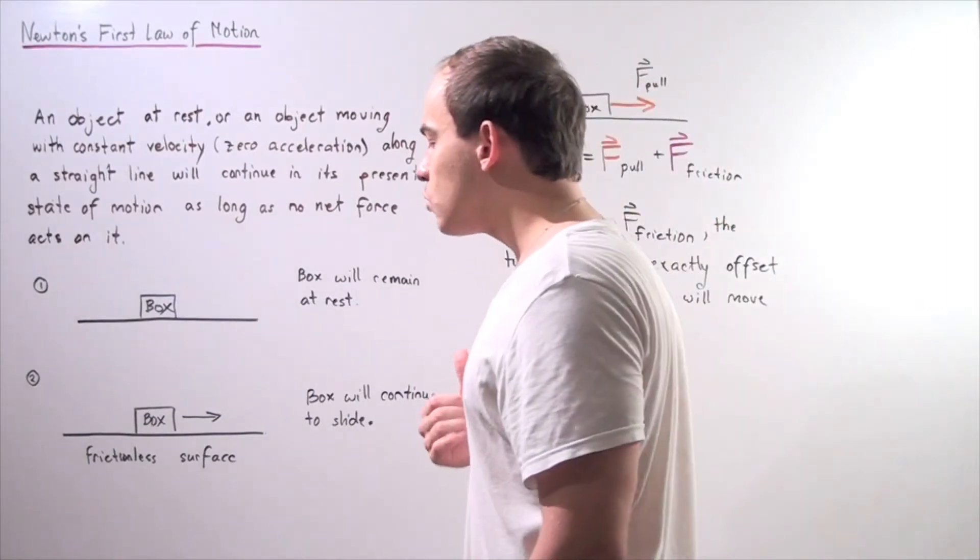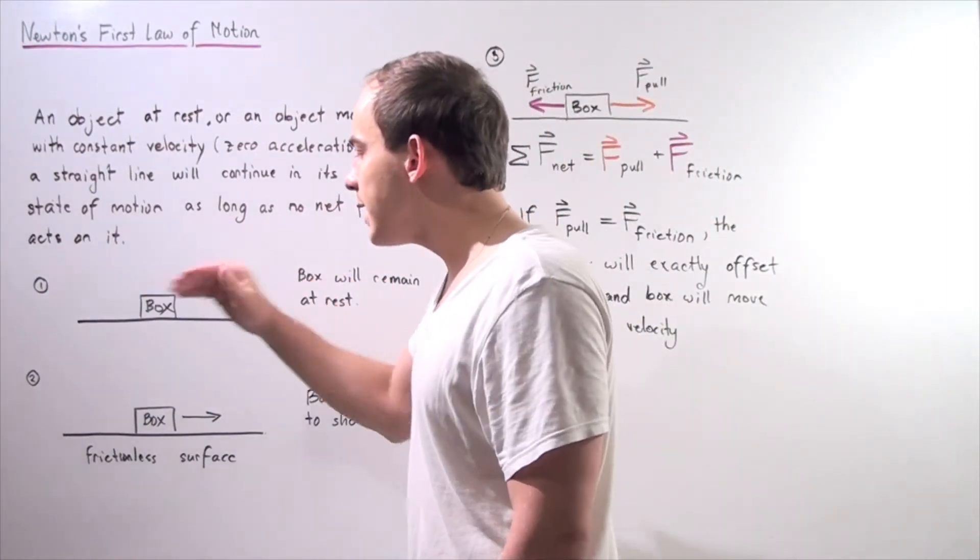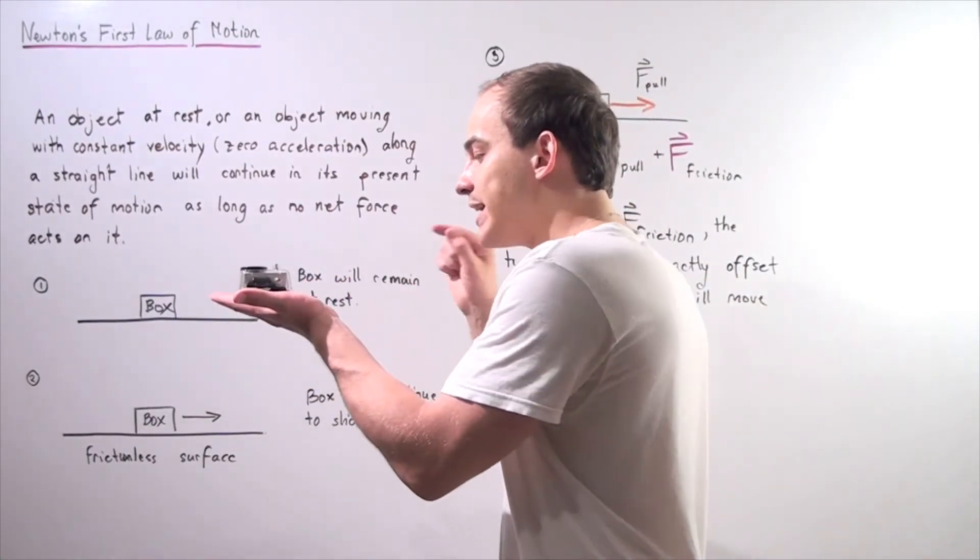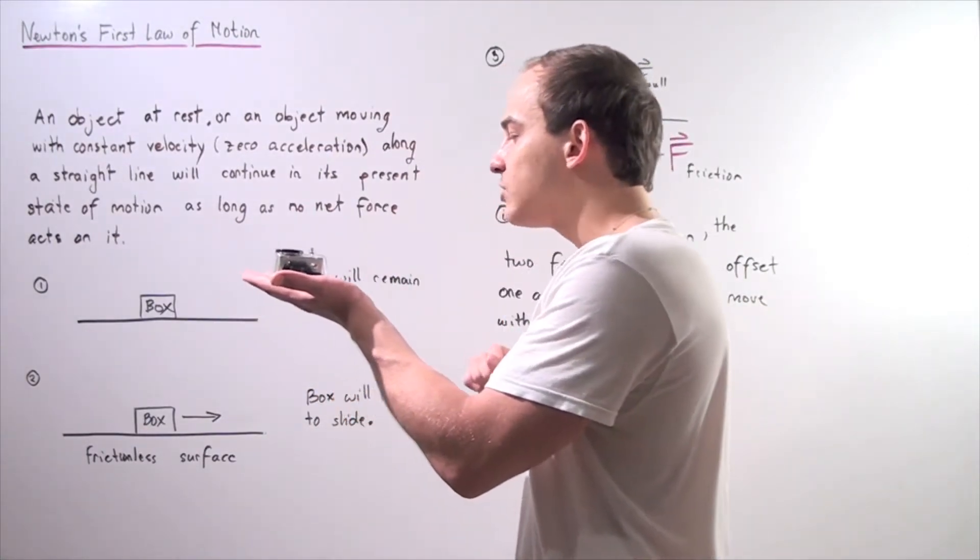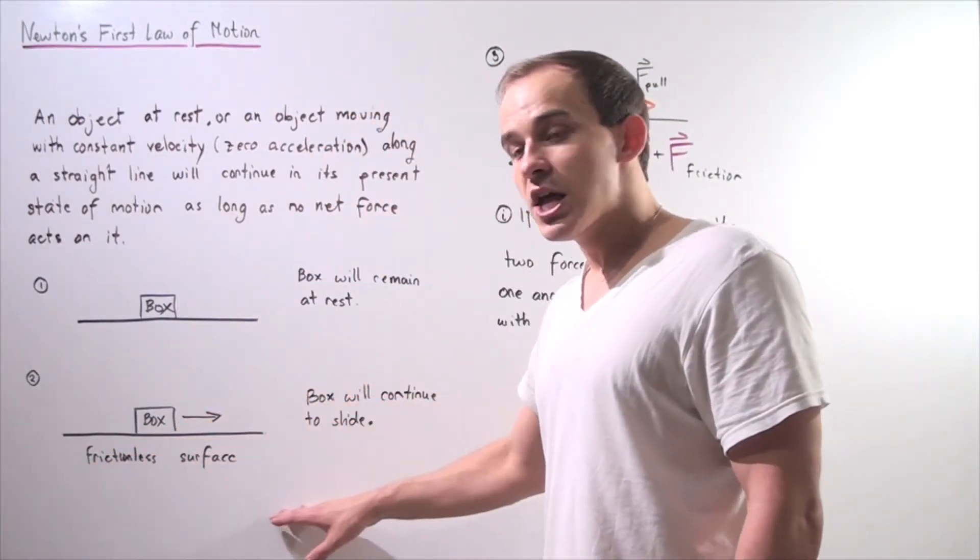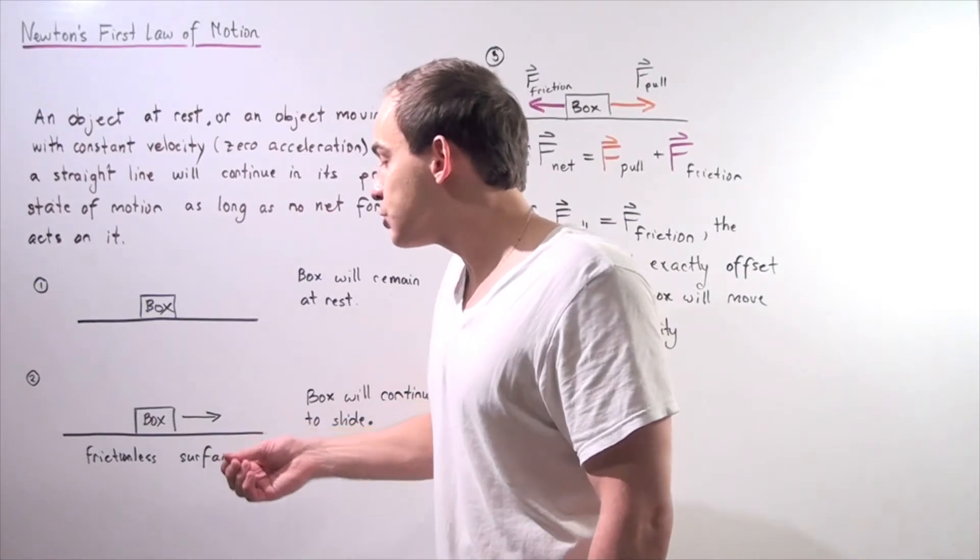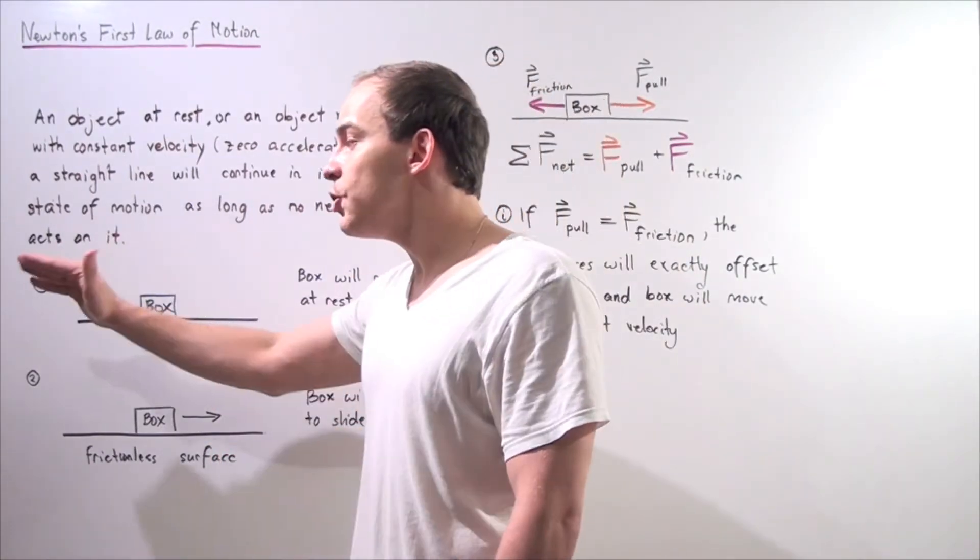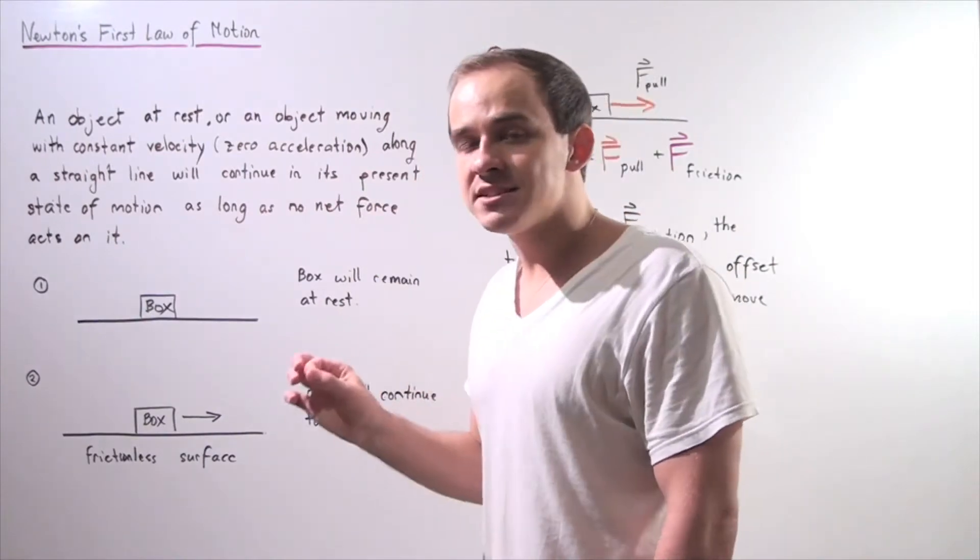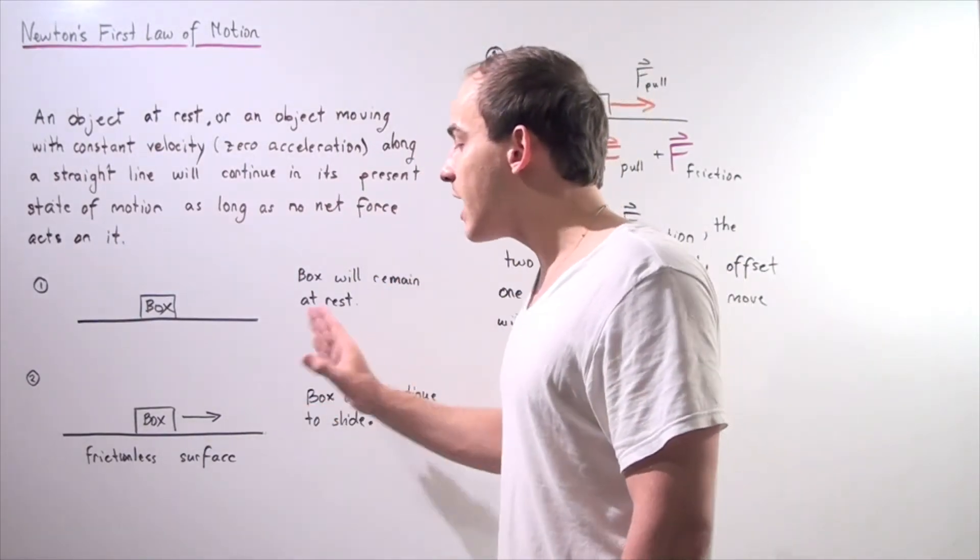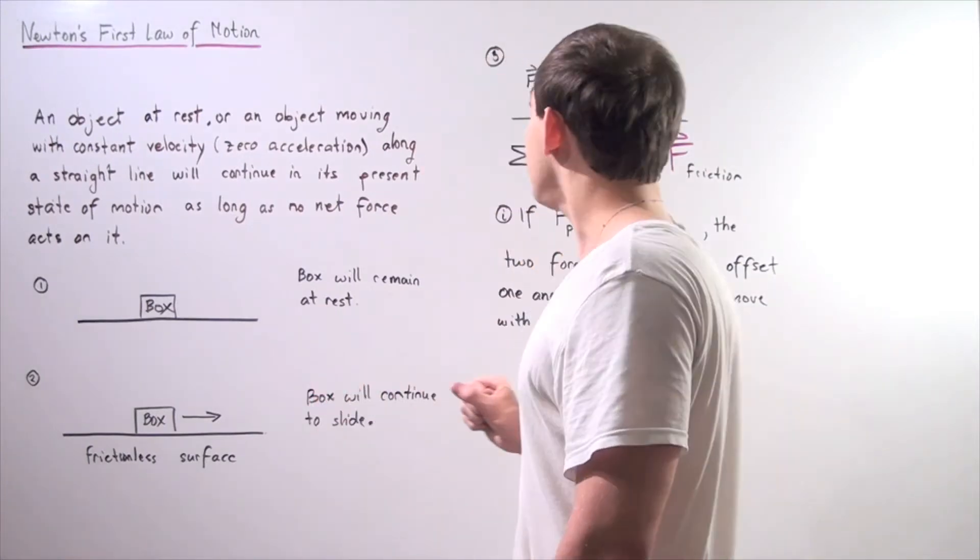Now let's suppose I take my box and I place it on a frictionless surface, and I give it a push. So I give it a small push and then I let go. Well, because my surface is frictionless, there's no force acting to stop my box. So my box will continue moving with a constant velocity as long as no net force acts on that box.